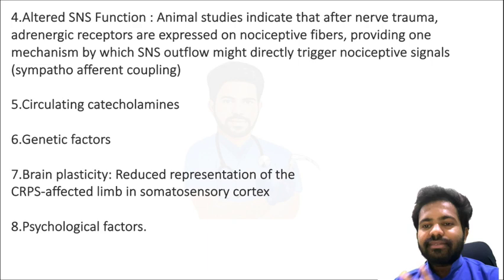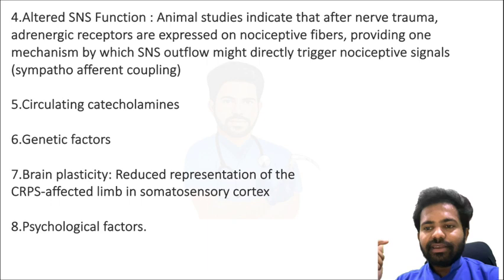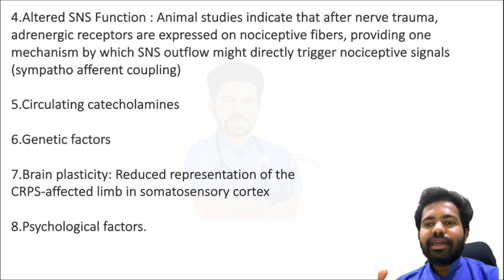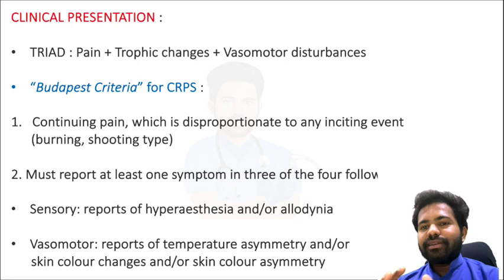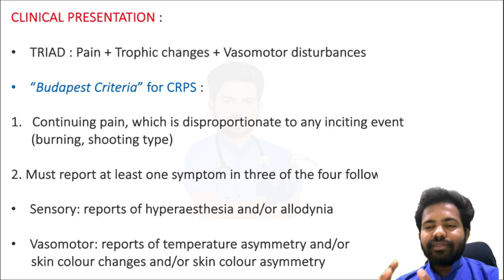Additionally, genetic factors and brain plasticity play a role, with brain plasticity causing a reduced representation of the CRPS-affected limb in the somatosensory cortex. Psychological factors also play a very important role. Understanding all these pathophysiological mechanisms is important because the treatment or prevention of CRPS after a trauma or injury depends on them.